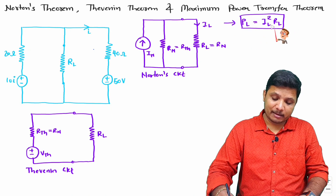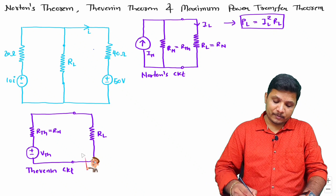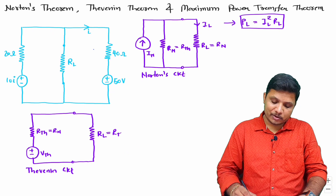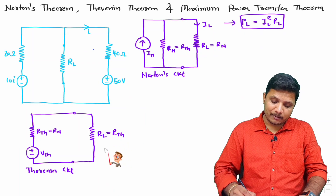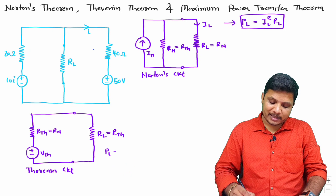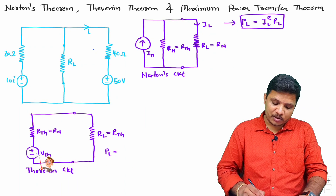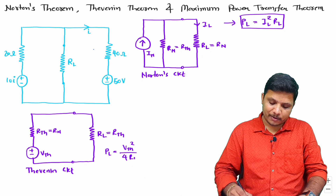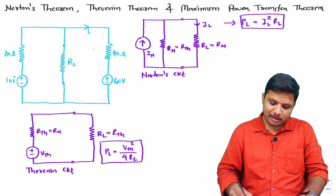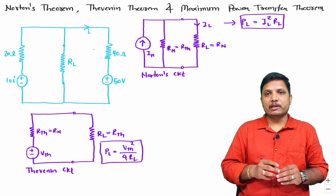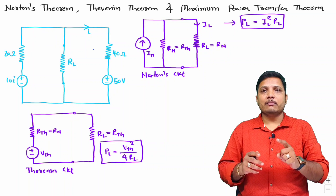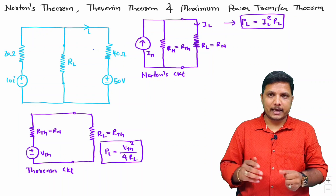For Thevenin's equivalent circuit, if R_L equals R_th then maximum power transfer occurs, and the maximum power transferred to the load is V_th squared divided by 4 R_L. We will prove that by both theorems the maximum power transfer to the load will be the same.